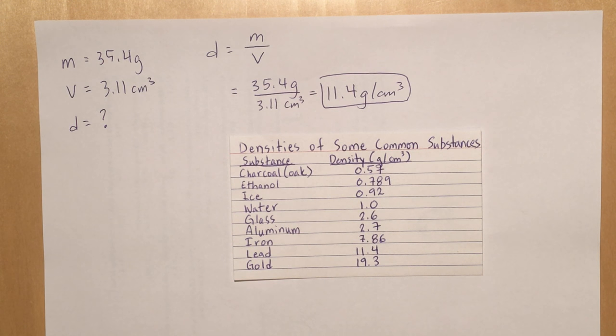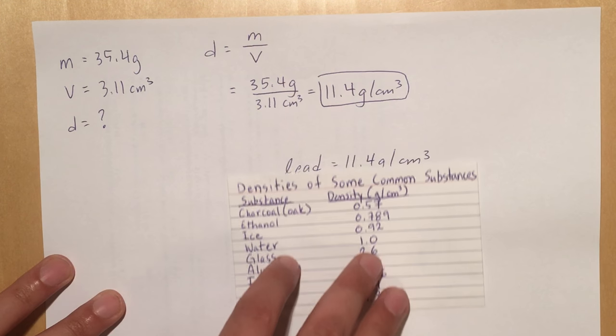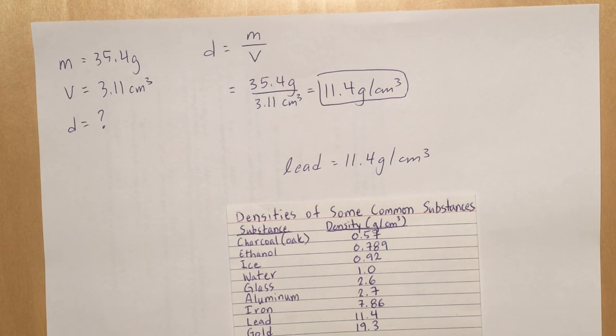You find something that's very close to that number, 11.4 grams per cubic centimeter. I see that lead is in fact 11.4 grams per cubic centimeter, so the answer to that problem is going to be lead.